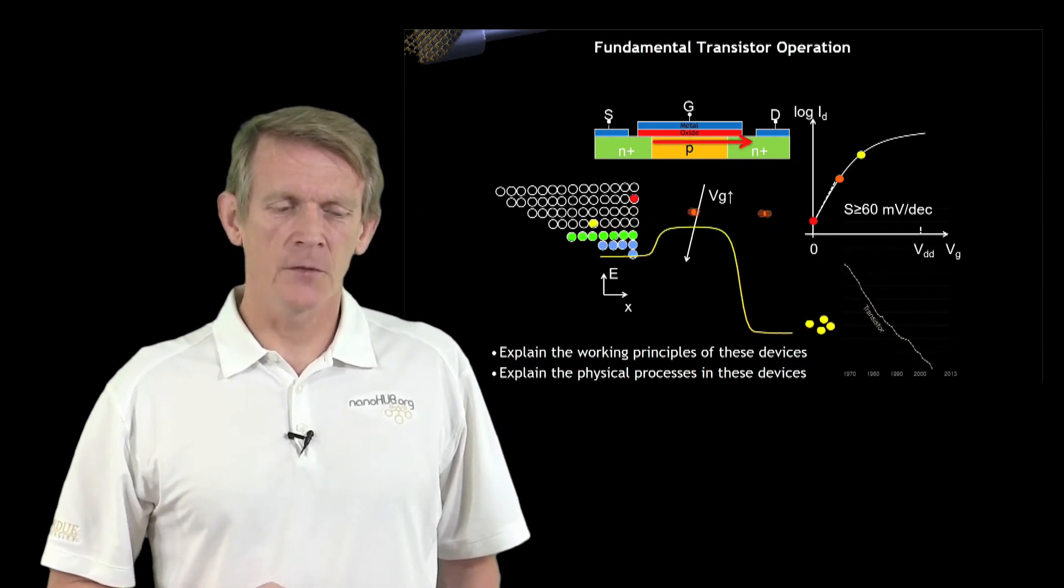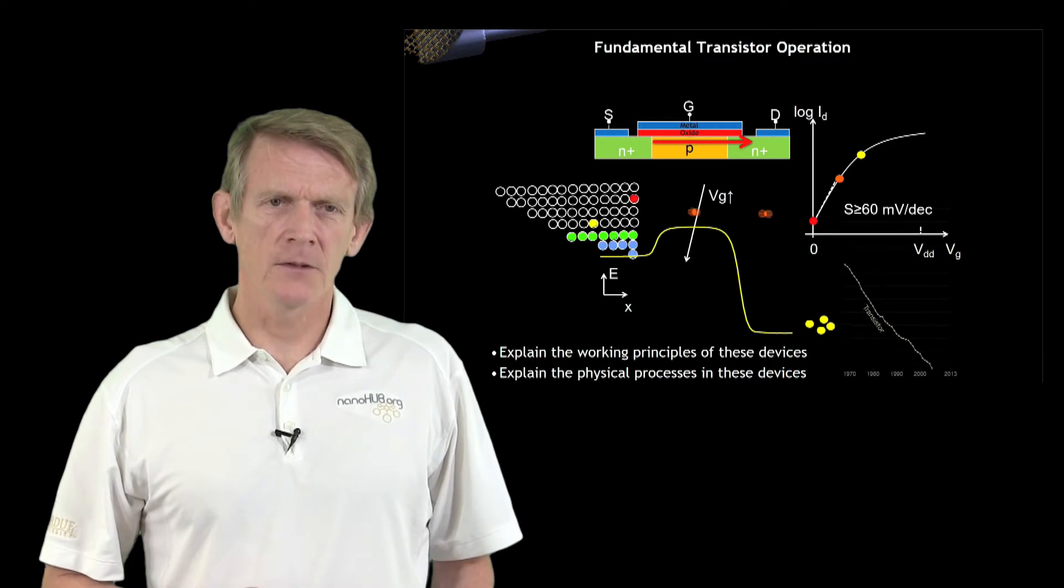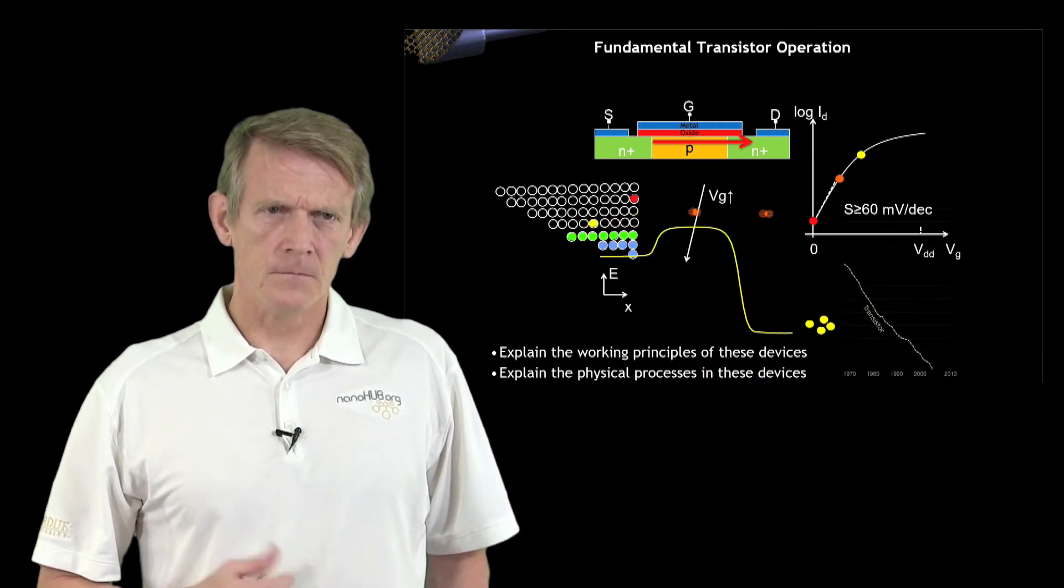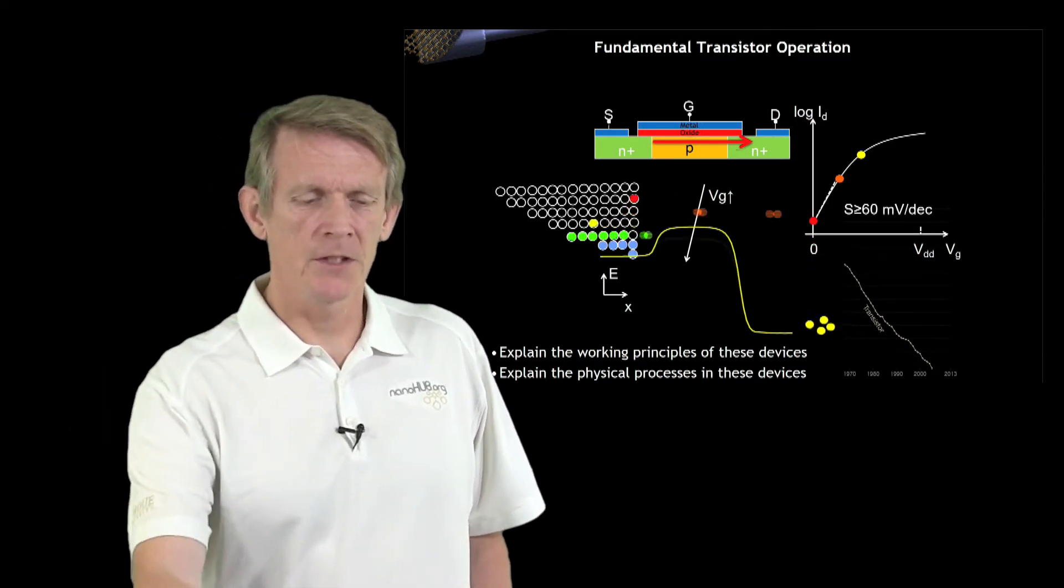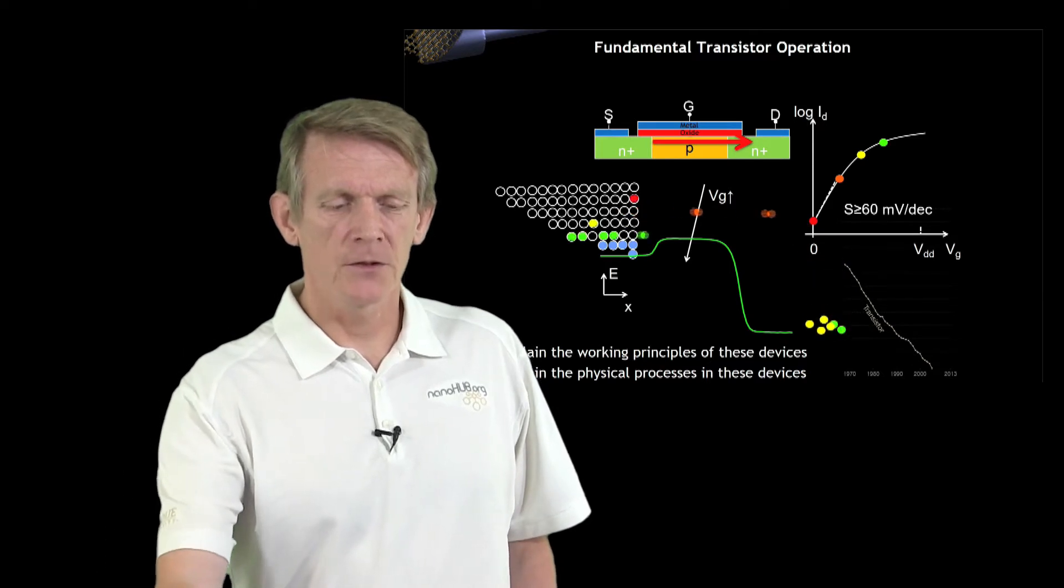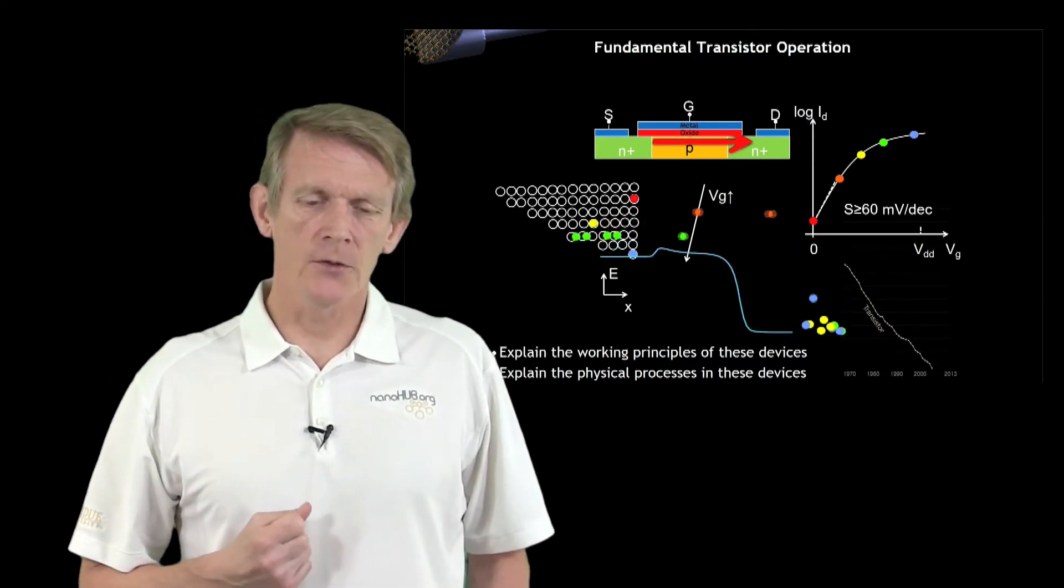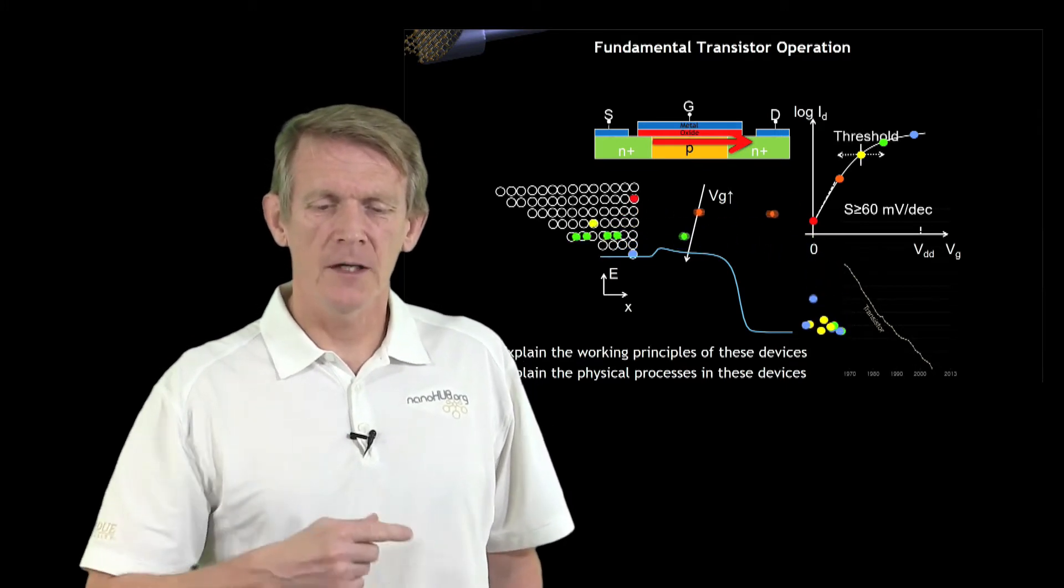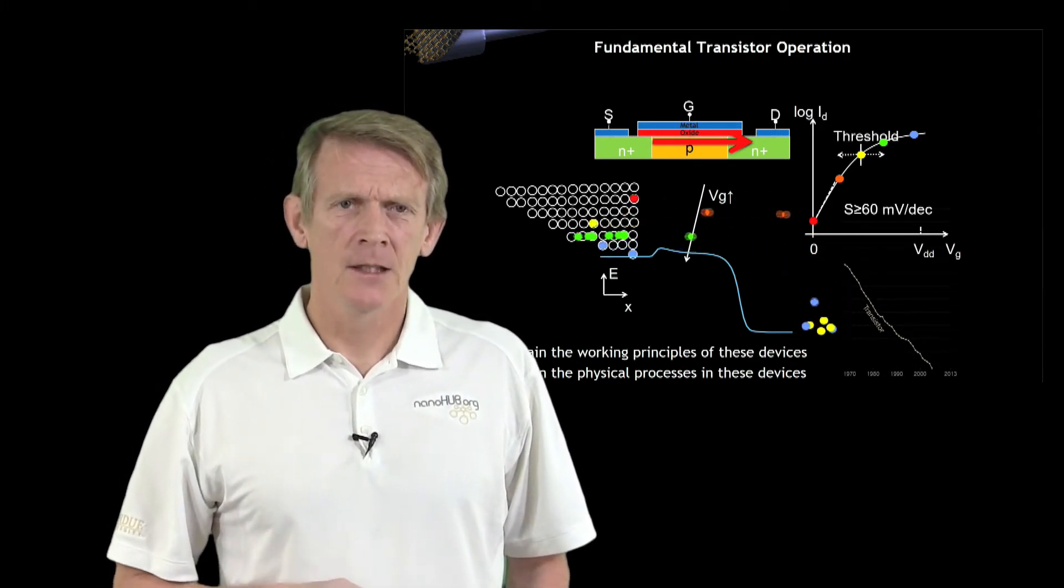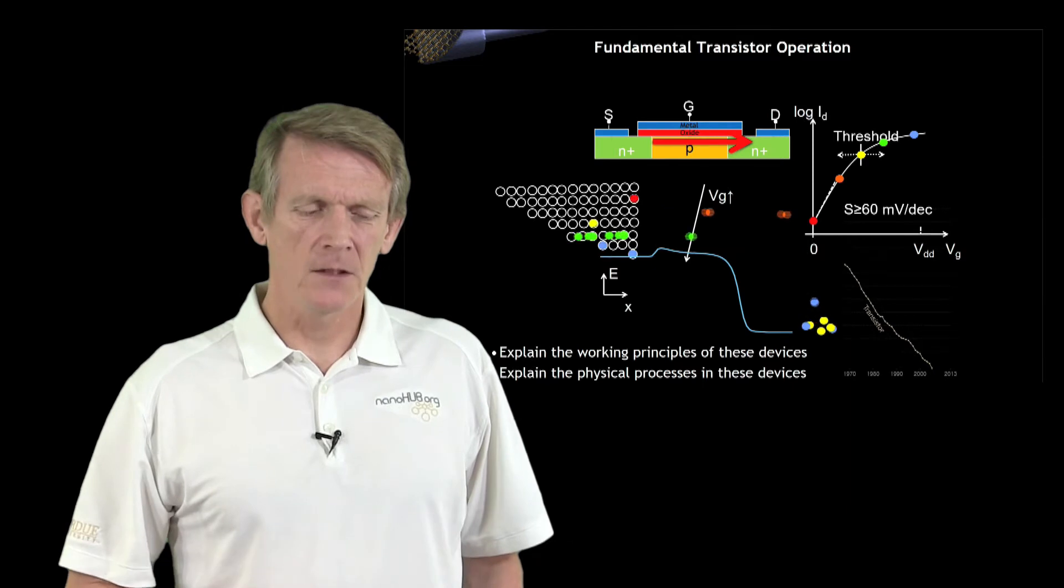As you increase the gate voltage further, you expose more electrons in the source to flow through the channel. You increase it more, uncovering more and more electrons and making them available to flow through the device. We'll define something called a threshold current that describes a transistor like this.